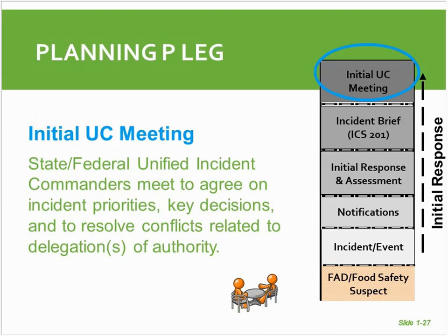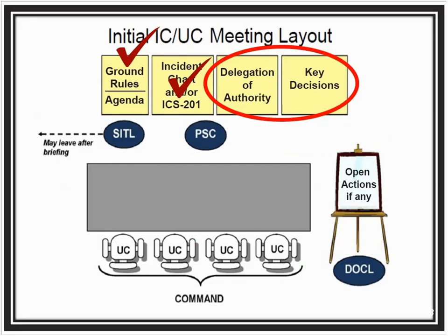Now we're at the last meeting in the initial response phase — the initial unified command meeting. In our organization, this is where our state and USDA incident commanders meet to agree on incident priorities, key decisions, resolve conflicts related to their incident and their delegations of authority. You don't want to have everybody on your incident management team present during this event — mainly those people need to be working on the incident and getting organized, setting up their incident command post. You may want to bring in a situation unit leader if you have new information to share, have them give their report, then they can leave. The planning section chief can facilitate this meeting, and it's always good to have someone documenting the decisions being made.